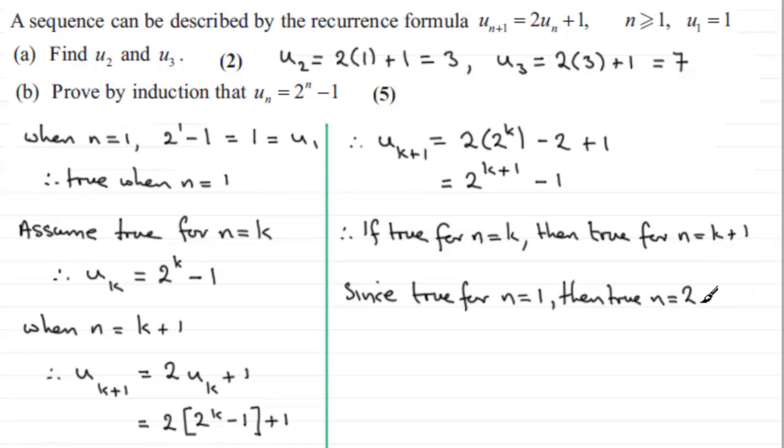Then it must be true for n equaling 2. And if it's true for n equals 2, it must be true for n equals 3, 4, and so on. So in other words, we finish by saying therefore, true for all integers, all positive integers. So we can say that where n is a member of the set of positive integers. So that's a z there, or my attempt is a z, and a little plus sign there.